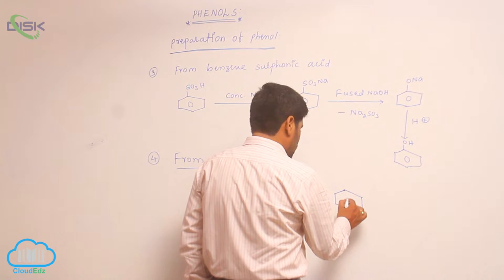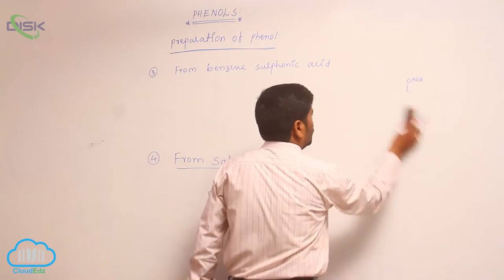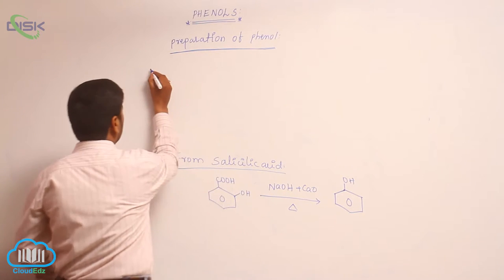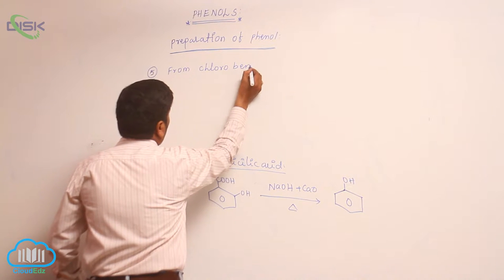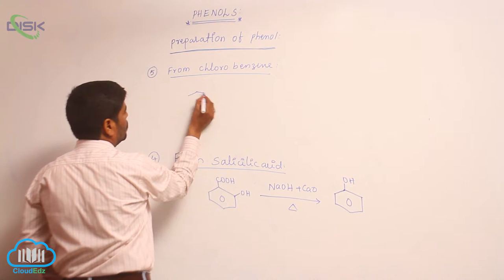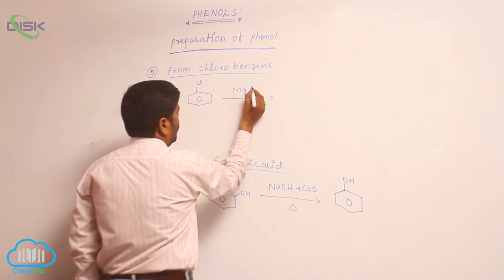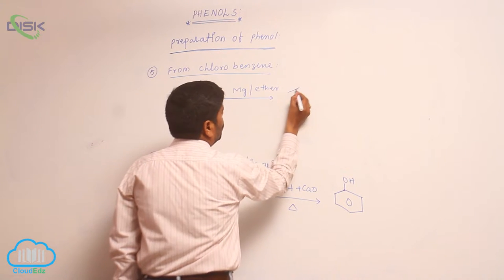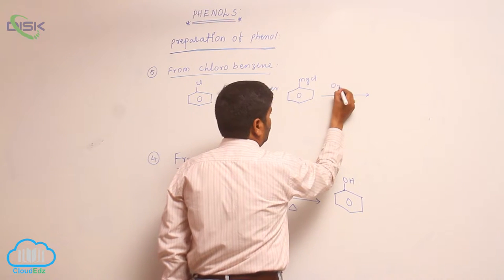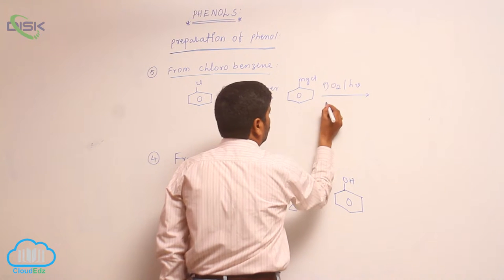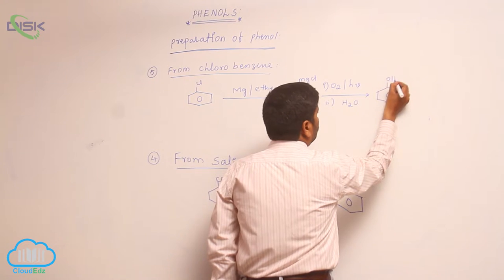Decarboxylation takes place to form phenol. The fifth method is from chlorobenzene. When chlorobenzene reacts with magnesium in the presence of dry ether, it forms phenyl magnesium chloride. This phenyl magnesium chloride reacts with O₂ in the presence of sunlight, followed by hydrolysis, to form phenol.